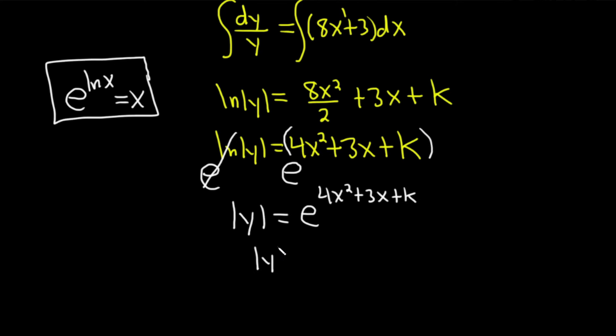So this is the absolute value of y equal to e to the 4x squared plus 3x times e to the k. You might say, what happened? That's because the bases are the same. Whenever the bases are the same and you multiply, you add the exponents. So basically, we're just adding exponents here. So go from the bottom to the previous step. We just add the exponents.